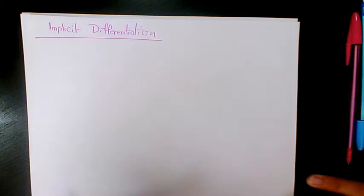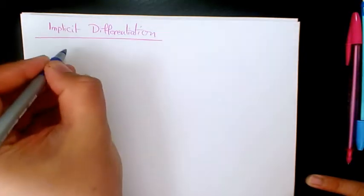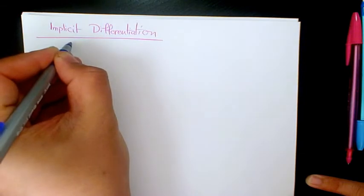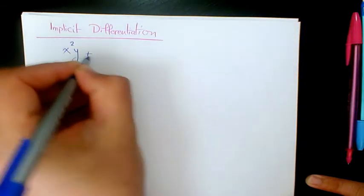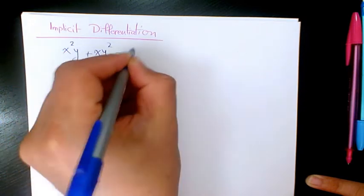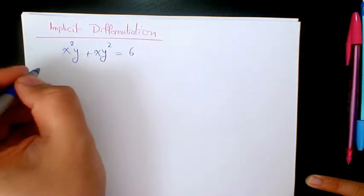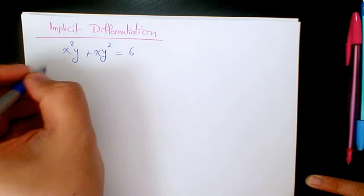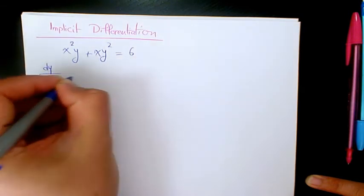What's up guys, this is Massey. Welcome to another video. In this video I have a function: x squared y plus x y squared equals 6, and I need to use implicit differentiation to find dy over dx.